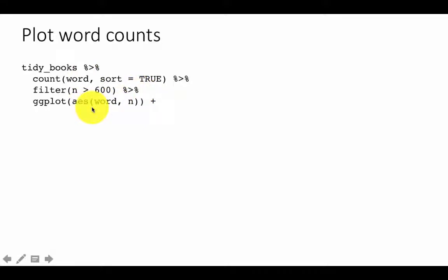And of course, what better to plot with than ggplot? So I'm saying ggplot and since this is piped, the result of this processing is already an input to ggplot. So ggplot aesthetics are going to be word and n, because we want to do a bar plot with one bar for each of the words that is used more than 600 times. And then we're going to do geom_bar.